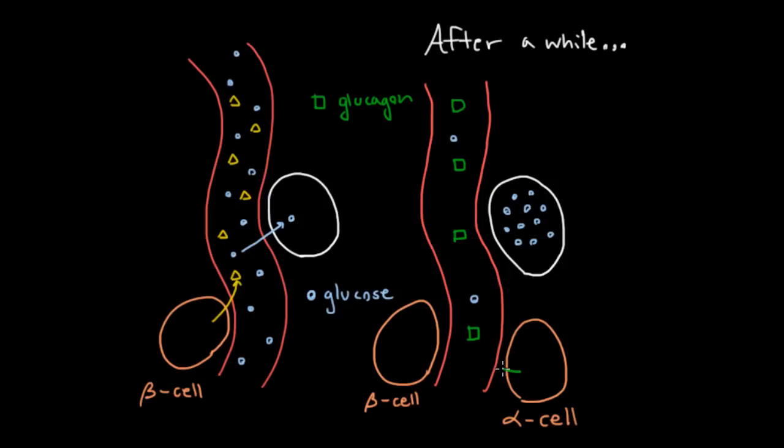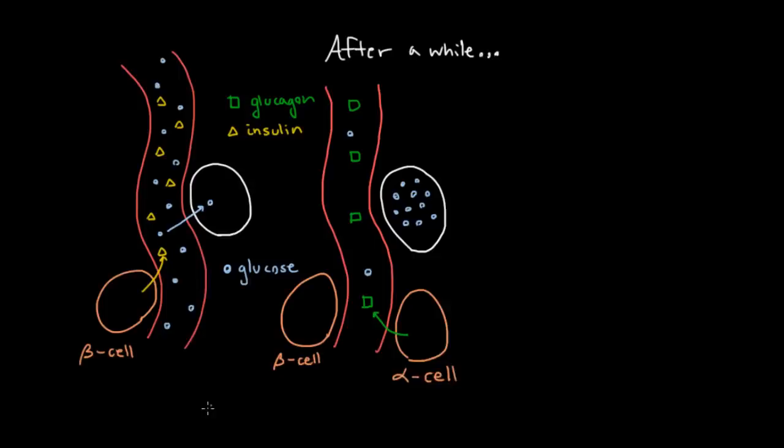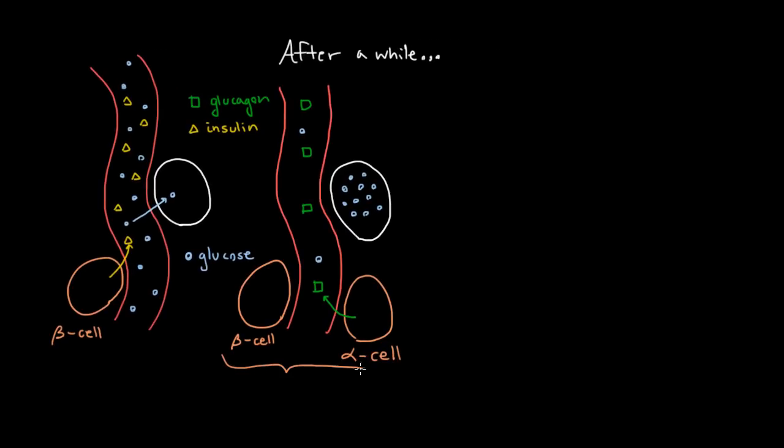So it's released from your alpha cells there, and when this is happening, your beta cells are no longer releasing insulin, which again we're going to draw as these little triangles. So again, to repeat, these cells, the beta cells and the alpha cells are in the pancreas.